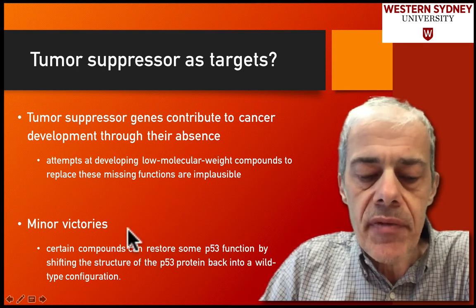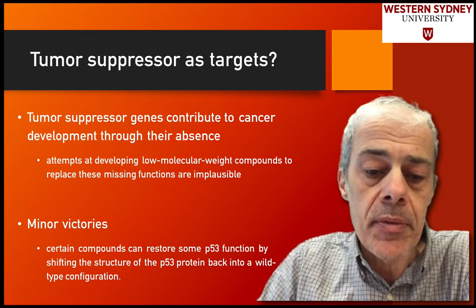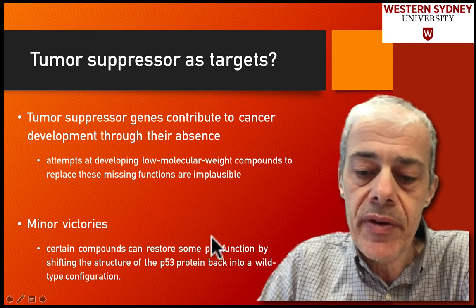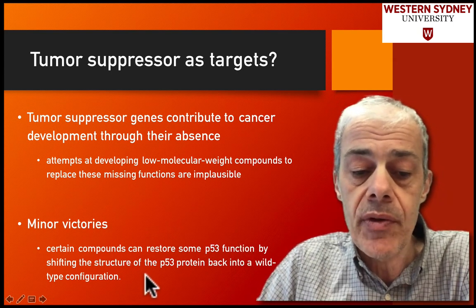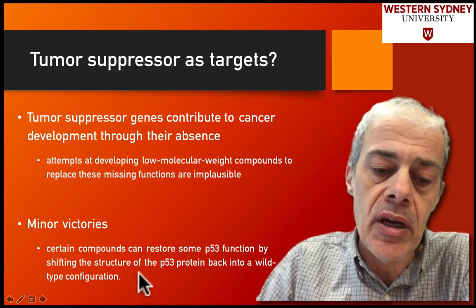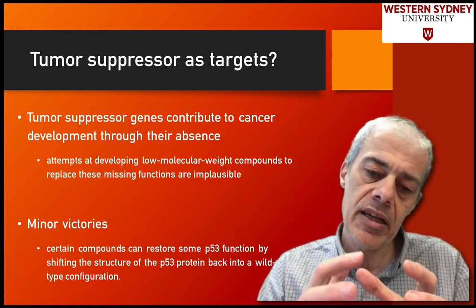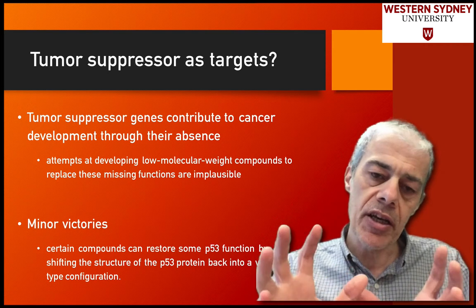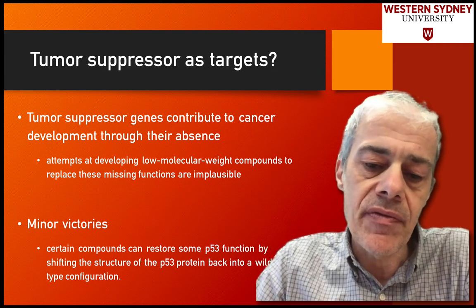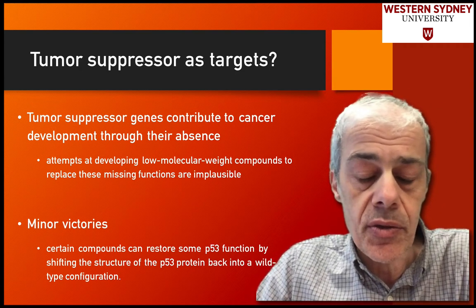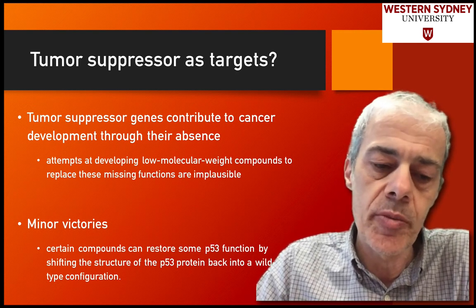There have been a couple of minor victories — maybe the exception that proves the rule. Some compounds can restore P53, a tumor suppressor, by shifting the structure of P53 back into the wild-type conformation. In some instances the tumor suppressor isn't functional because it's mutated and in the wrong structure; these molecules bind to it and push it back into the right structure. But it's a rare instance and difficult to conceive as a widespread solution.